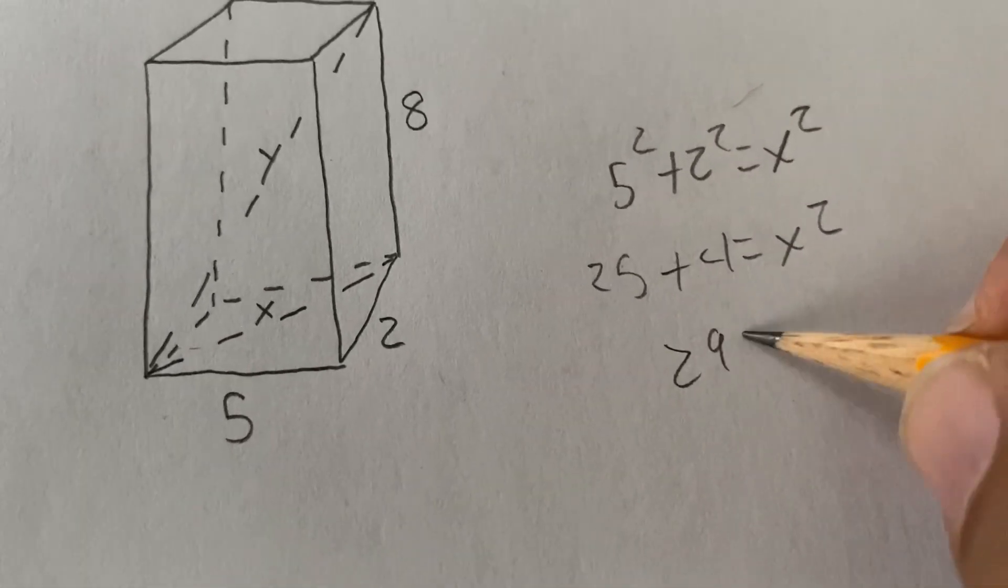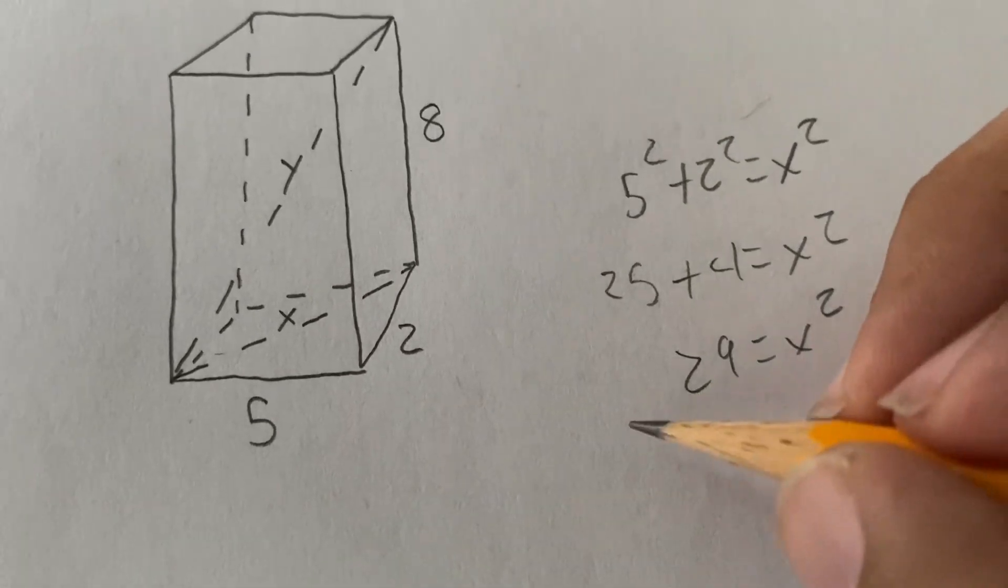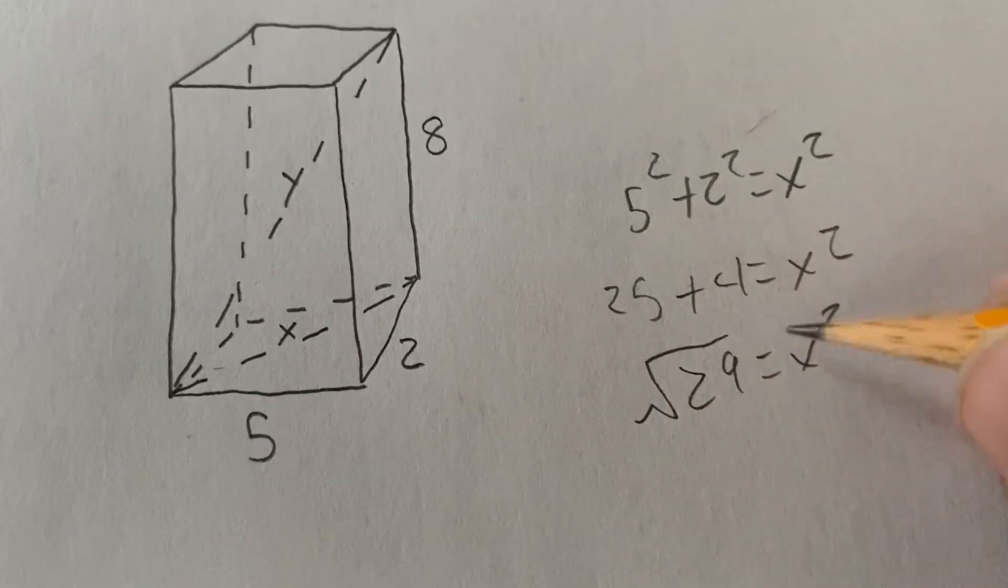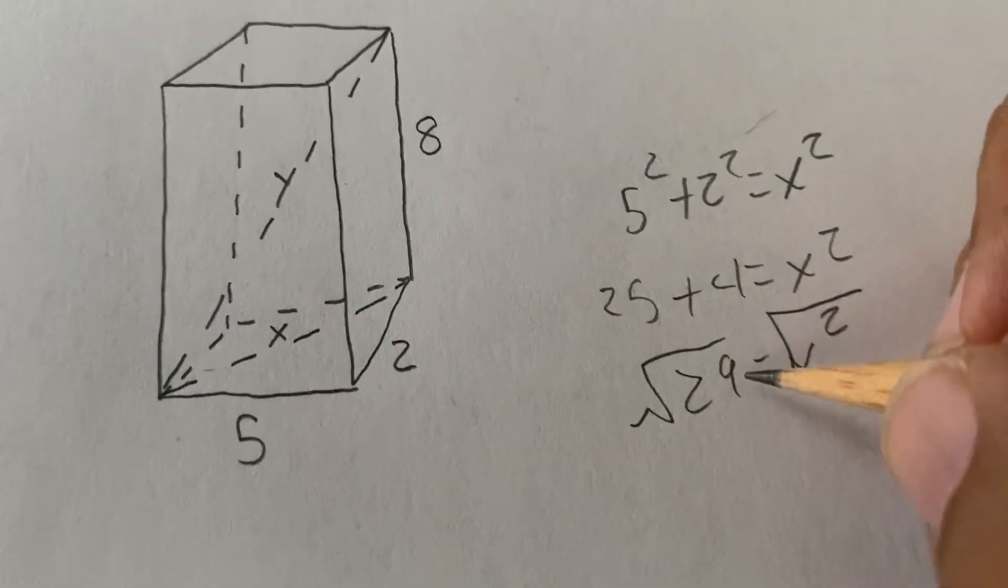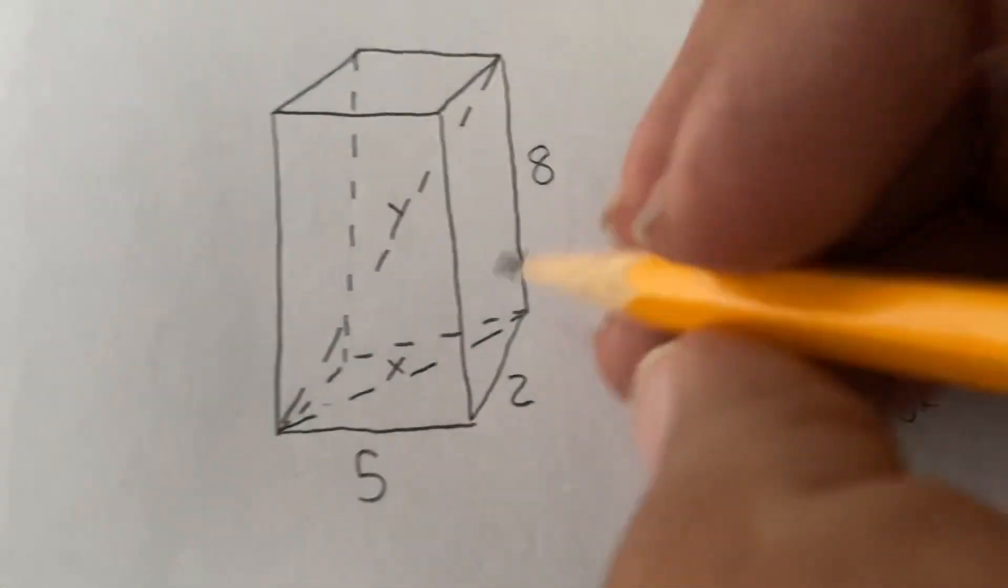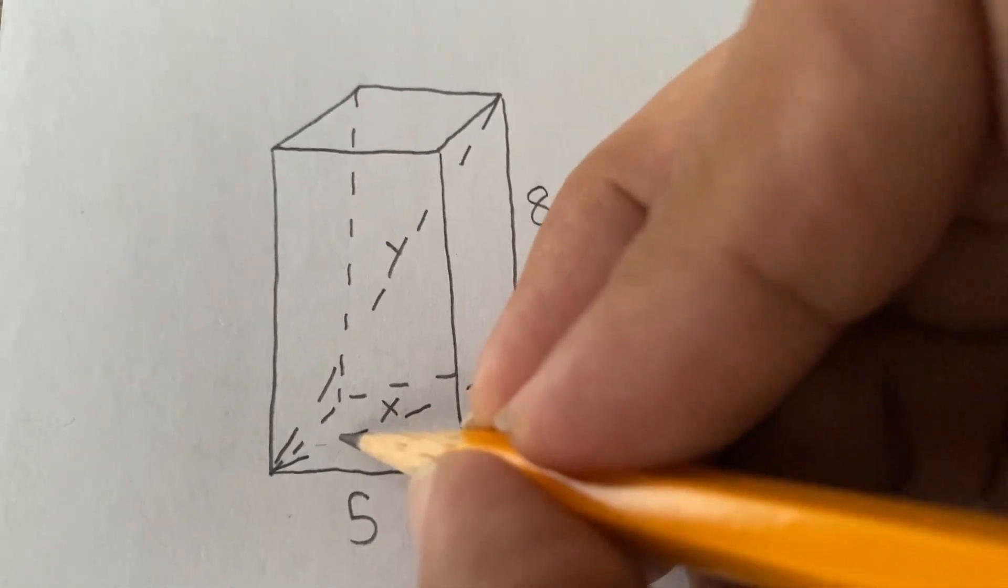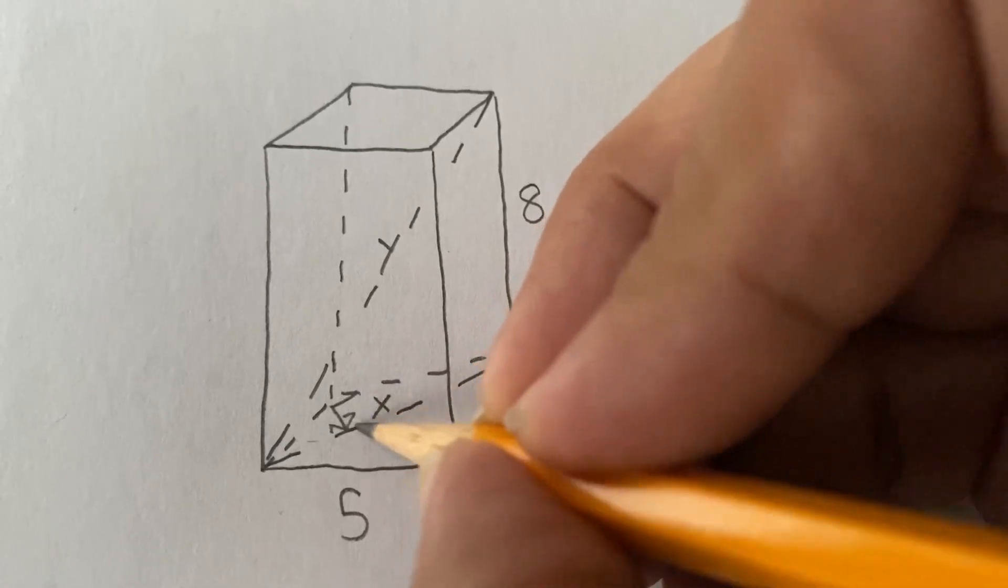So, 29 equals x squared. And now, the square root of 29 is your result for x. So, now I know that this one is the square root of 29.